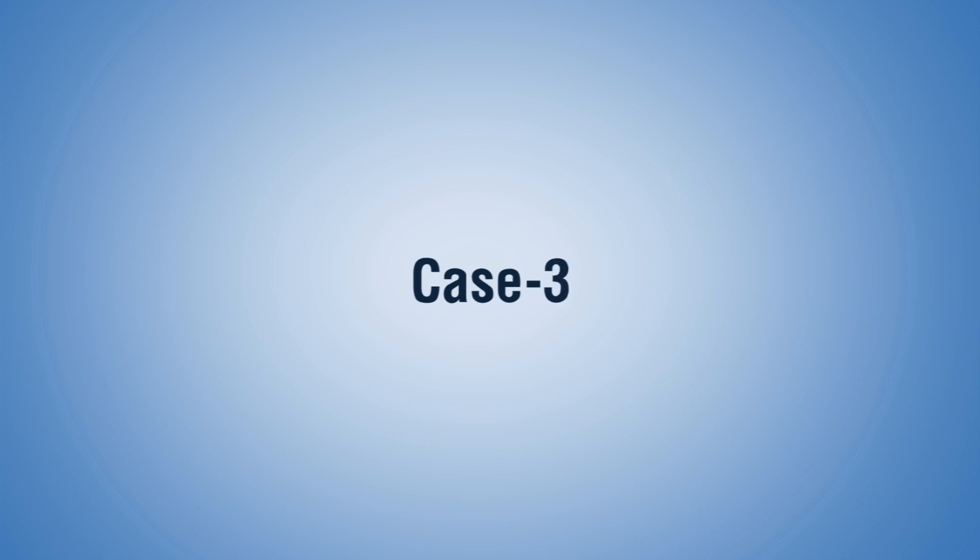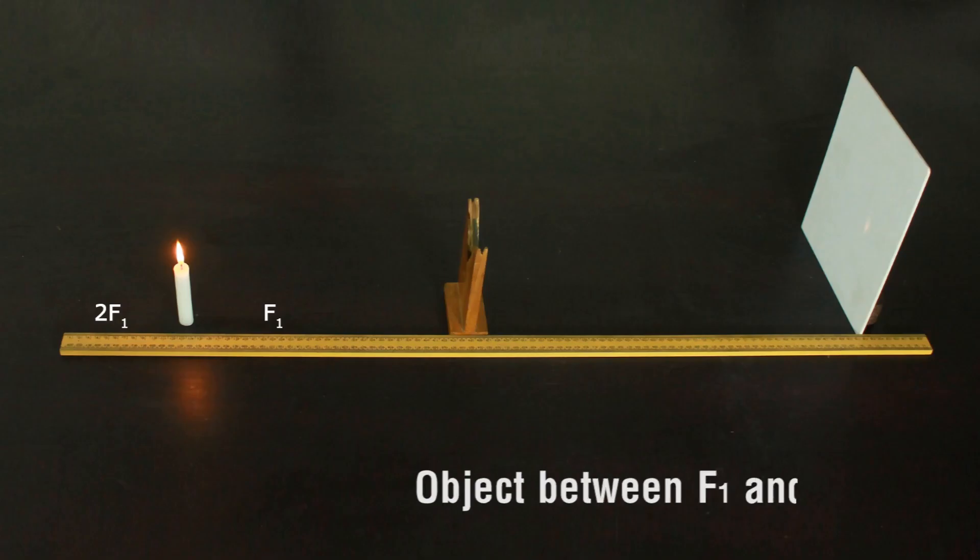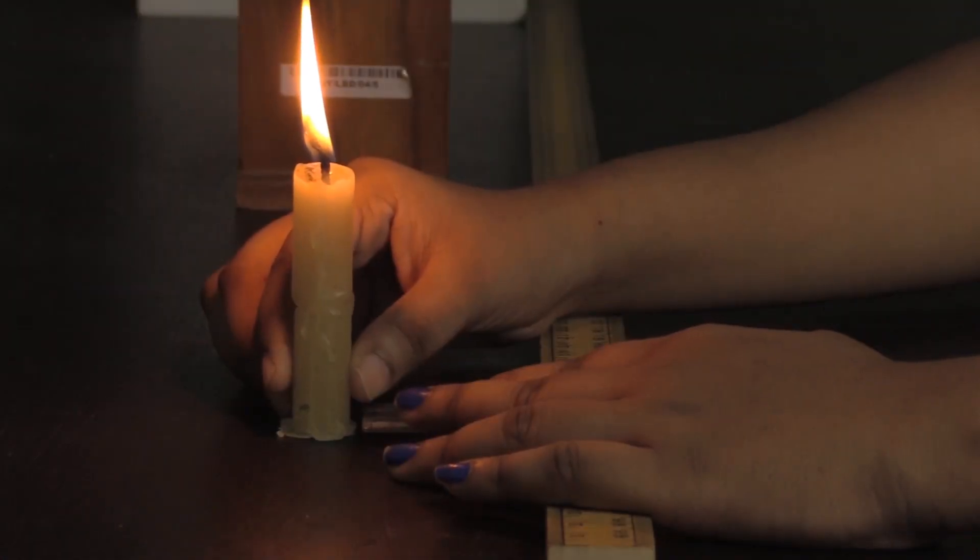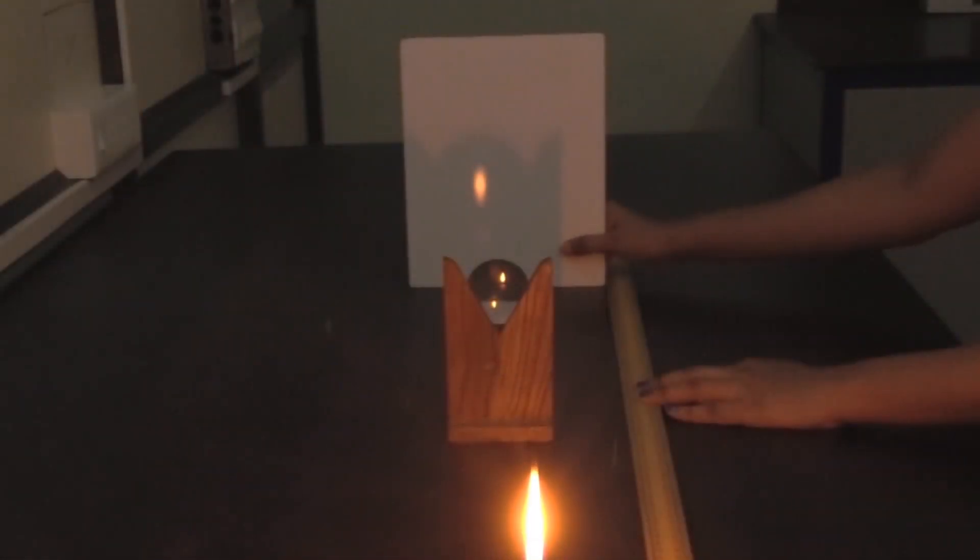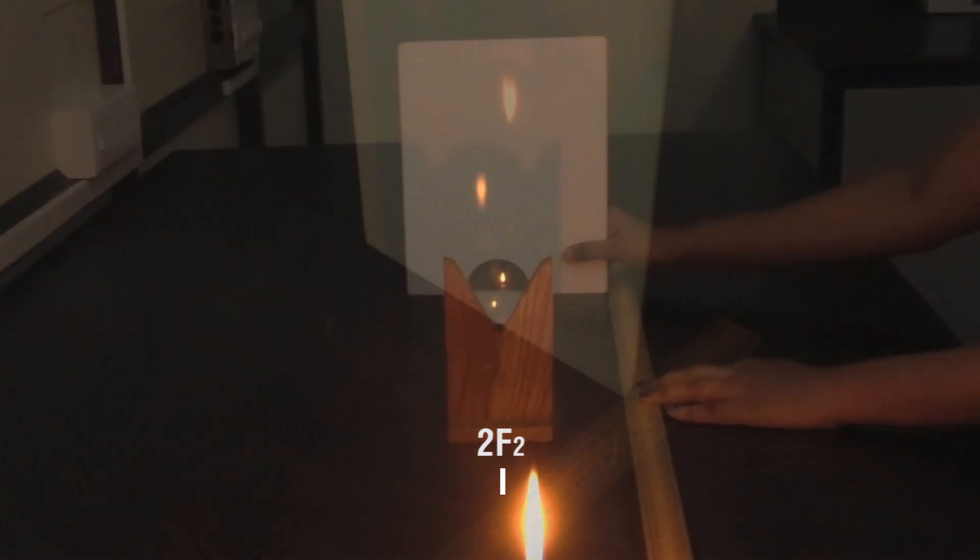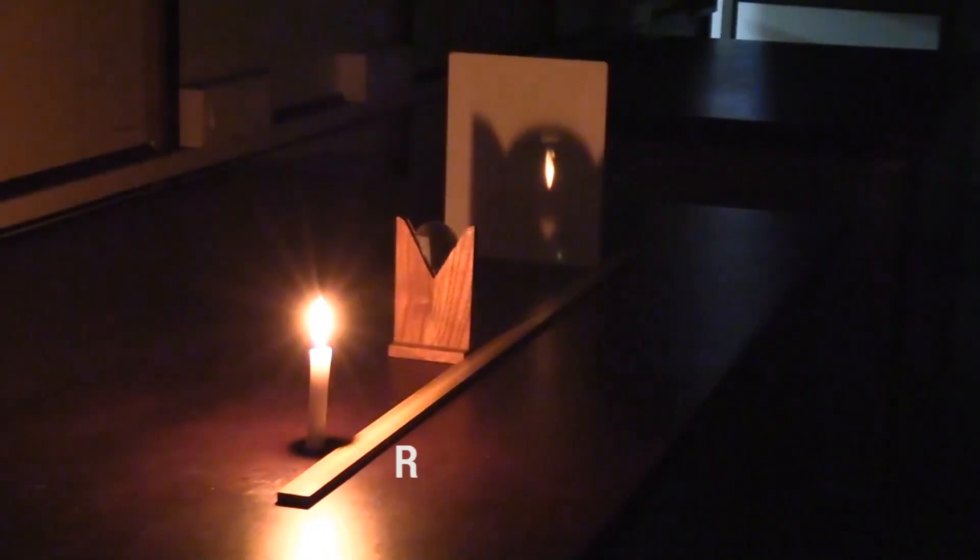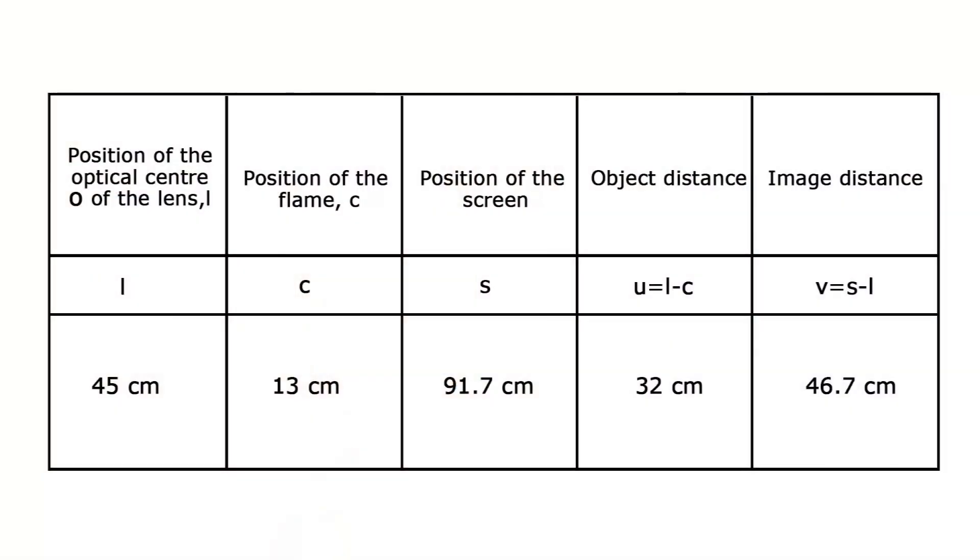Case 3: Object between F1 and 2F1. Place the candle at a distance between F1 and 2F1. Adjust the position of the screen to obtain a sharp image. Notice that the image will be formed beyond 2F2. A real, inverted, and enlarged image is obtained in this case. Record the observations in a table.